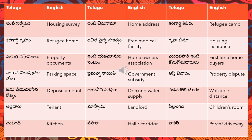'Vakili' means porch or driveway. These are the next set of words, and there are many more vocabulary items still to be uploaded. You can go through these in the meantime.